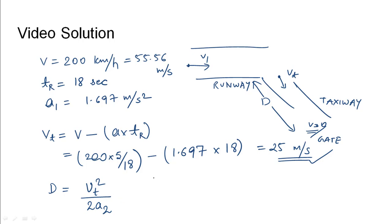This is similar to the stopping sight distance concept, where braking distance is given by v²/(2a). Substituting vₜ = 25 m/s and the deceleration rate on the taxiway a₂ = 1 m/s² (given in the problem), we calculate the distance.